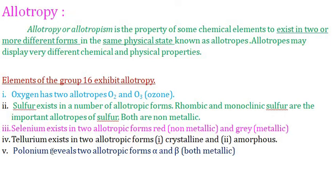Group 16 elements exhibit allotropy. Oxygen has two allotropes: O2 (dioxygen) and O3 (ozone). Sulfur exists in a number of allotropic forms; rhombic sulfur and monoclinic sulfur are the most important allotropes of sulfur. Both oxygen and sulfur are non-metals.